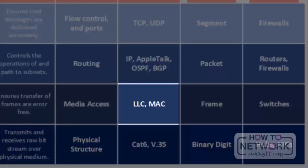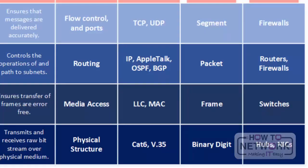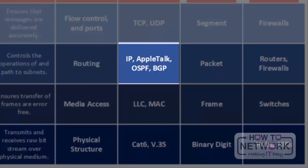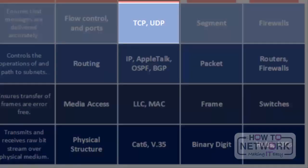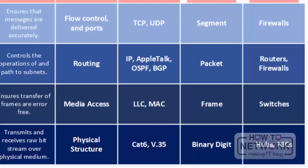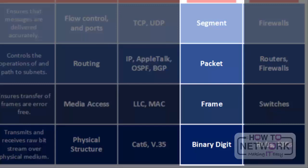At the data link layer, it's broken into the LLC and the MAC sublayers — MAC addresses are something you know about, and now you know where it fits in the OSI model. At layer 3 it's IP or AppleTalk, but also routing protocols such as OSPF or BGP. Layer 4 examples are TCP or UDP ports — the many different ports used as channels for communications between applications. When data passes through each layer it has a unique signifier: at the physical layer it's a binary digit (1 or 0), at layer 2 they're called frames, layer 3 packets, and layer 4 segments.